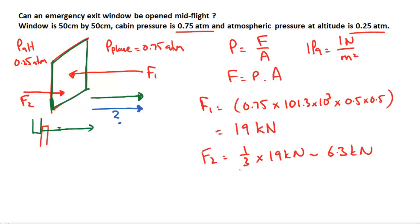That means the force that we have to apply is equal to the difference between those two. The force that we need to apply to open the window is going to be equal to that 19 kilonewtons minus 6.3 kilonewtons, and that's approximately 12.7 kilonewtons.